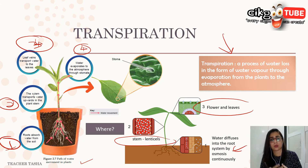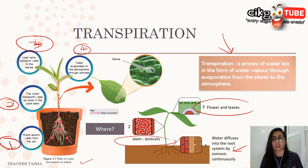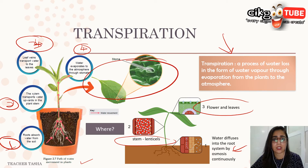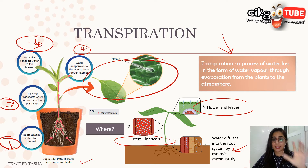Finally, water evaporates to the atmosphere through the stomata, and also from the stem through the lenticels. Some students think transpiration is only water lost from the leaf — that's not correct. It's the whole process from the roots until the water evaporates through the leaves.